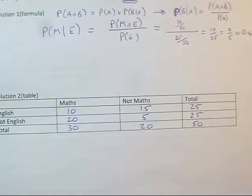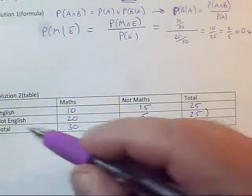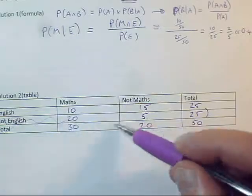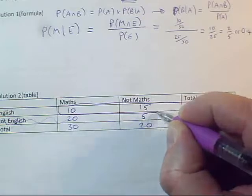A student who studies English. So for this one here, this not English row of the table, I can completely ignore. I can even cross it out. And so the totals I'm not bothered by. I'm only interested in the part of the table where people study English.